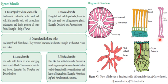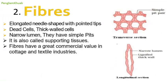Number three is osteosclerids (bone cells) — rod-shaped with dilated ends and tapering middle, resembling bones; found in leaves and seed coats of Pisum and Hakea. Number four is astrosclerids — star-shaped with lobes and arms radiating from a central body; found in petioles and leaves of Nymphaea and Trochodendron. Number five is trichosclerids — hair-like, thin-walled sclerids with numerous small angles, embedded in the walls; mostly found in stems and leaves of hydrophytes like Nymphaea and roots of Monstera.